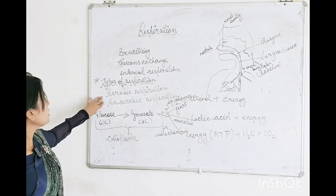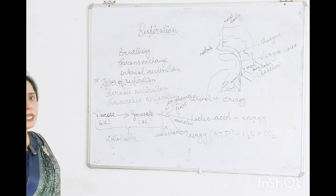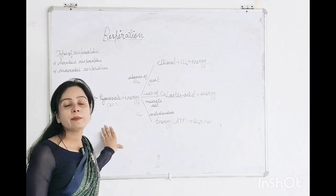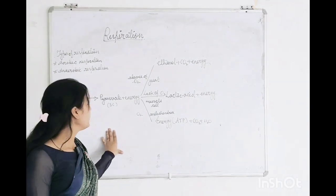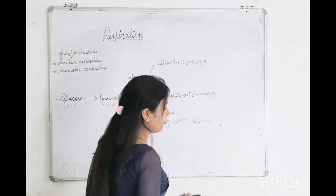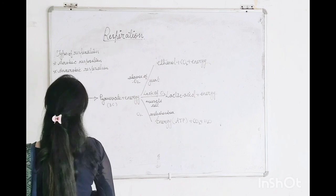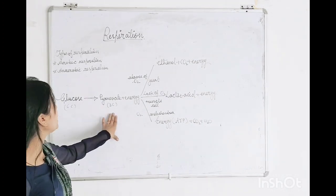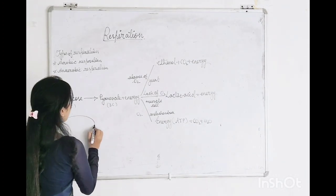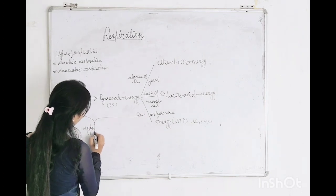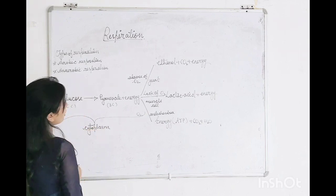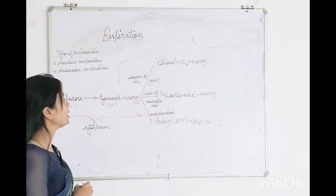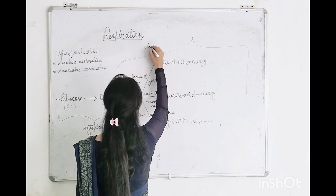In anaerobic respiration, there are two types: first is alcoholic fermentation, and second is lactic acid fermentation. Respiration may take place in different conditions — lack of oxygen, absence of oxygen, or presence of oxygen. The first step in all three conditions is the breakdown of glucose into pyruvate — 6-carbon glucose breaks down into 3-carbon pyruvate. This always completes in the cytoplasm of the cell. The whole anaerobic respiration reaction completes in the cytoplasm of the cell.